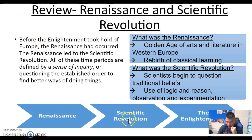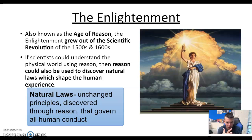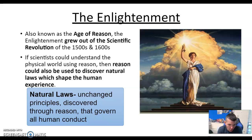So you have the Renaissance, which led to the scientific revolution, and the scientific revolution led to the Enlightenment. In your notes: what is the Enlightenment? It's also known as the Age of Reason. The Enlightenment grew out of the scientific revolution. If scientists could understand the physical world using reason, then reason could be used to discover natural laws and shape human nature.